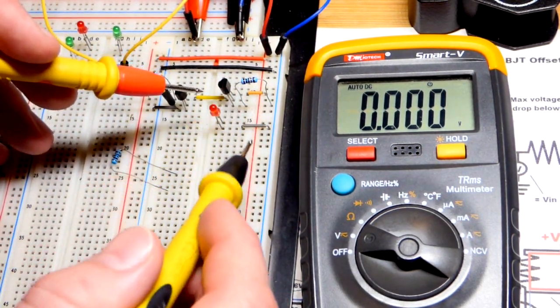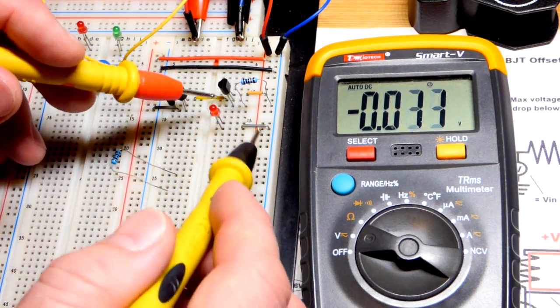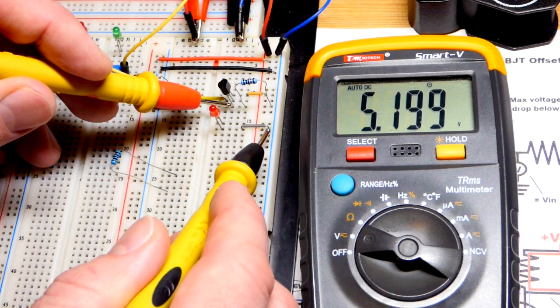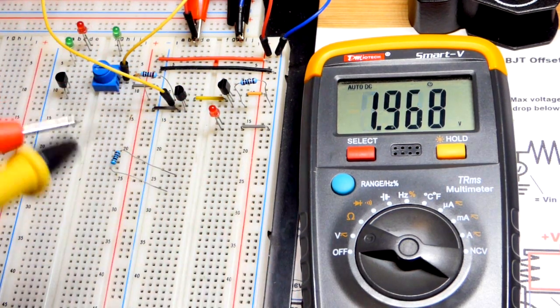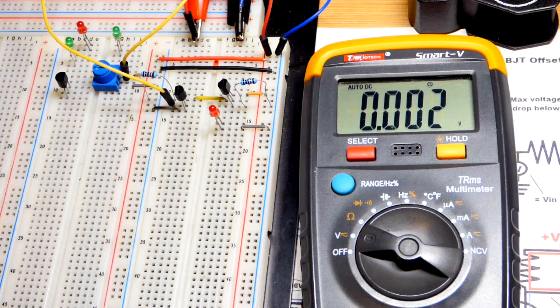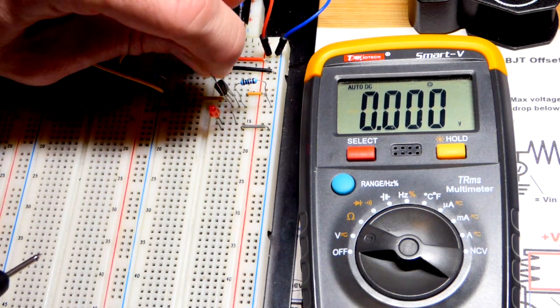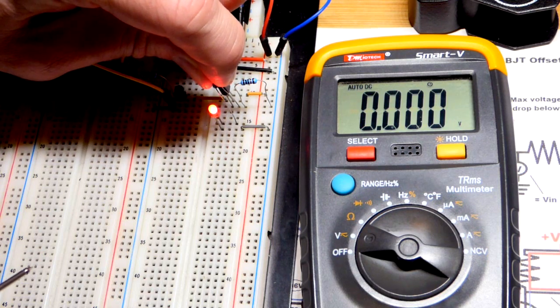So now we just have this 10 kilo ohm resistor there that helps hold the voltage. But there you can see now we got the 5.2. So it's doing even better. If we asked for less current from this load it'd probably be even better. But in any case there you can see how bright it is.